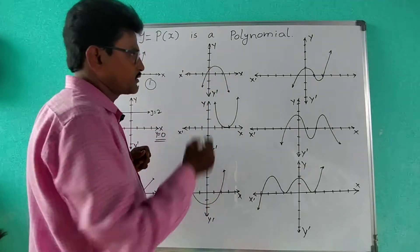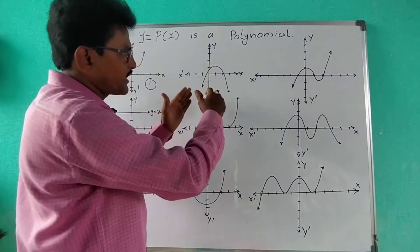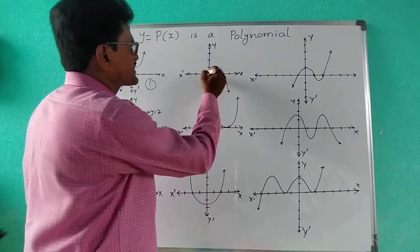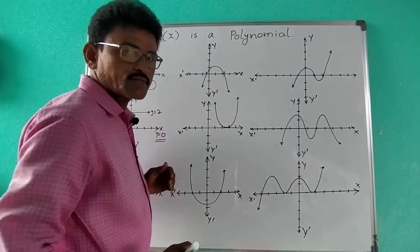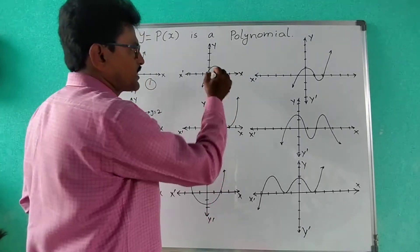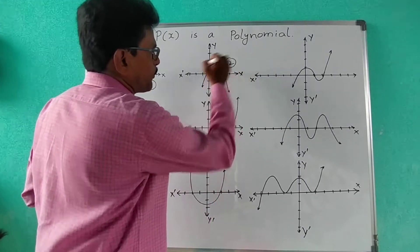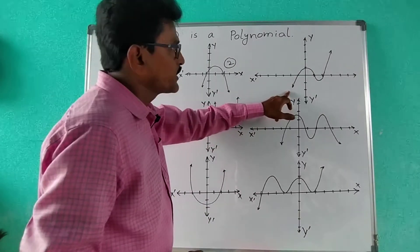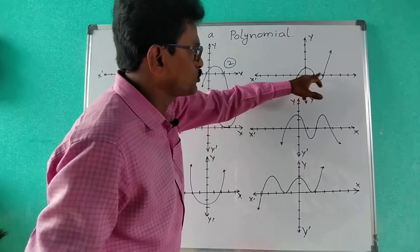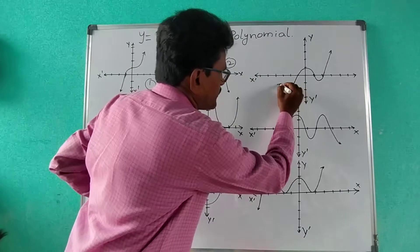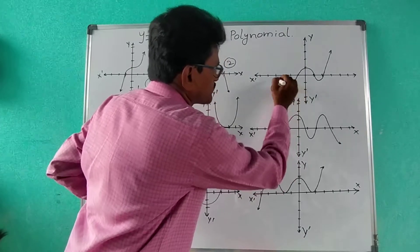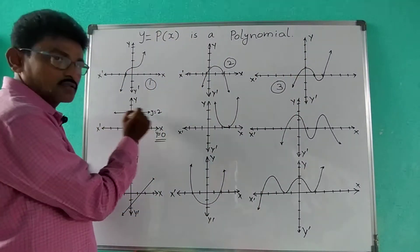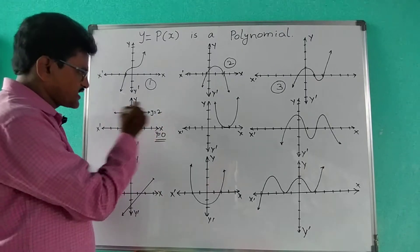This is a quadratic polynomial — a parabola that opens downward. Here it is cutting the x-axis at two places, so the number of zeros for this graph is two. See this curve — it is cutting the x-axis at one, two, three places, so here the number of zeros is three.